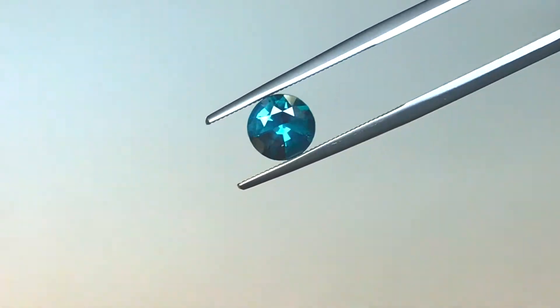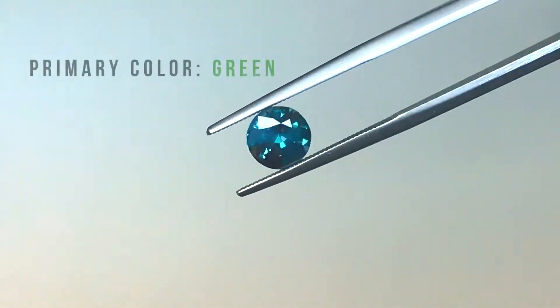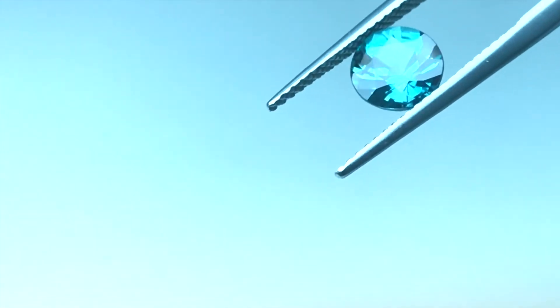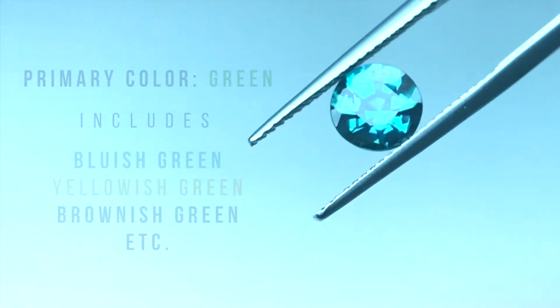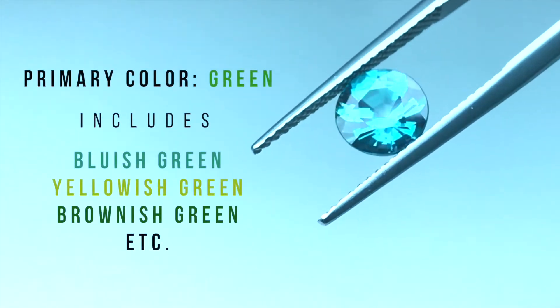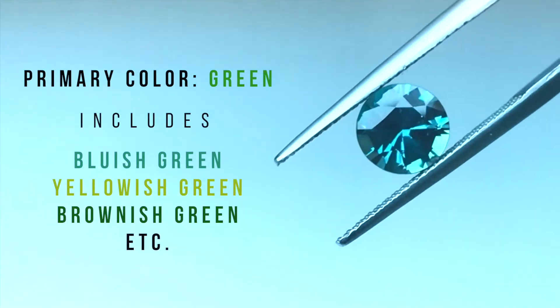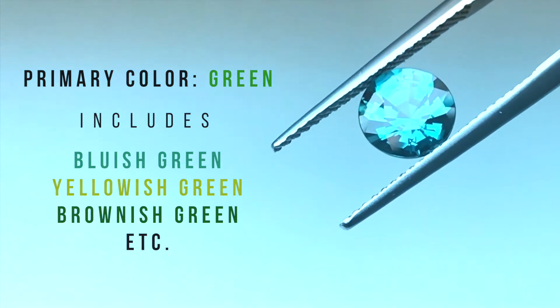Once under this light, the alexandrite should appear green. Bluish green, such as the one shown, is one of the many variations of alexandrite's primary color. Other primary colors under daylight may be yellowish green, brownish green, or similar modifiers as well.